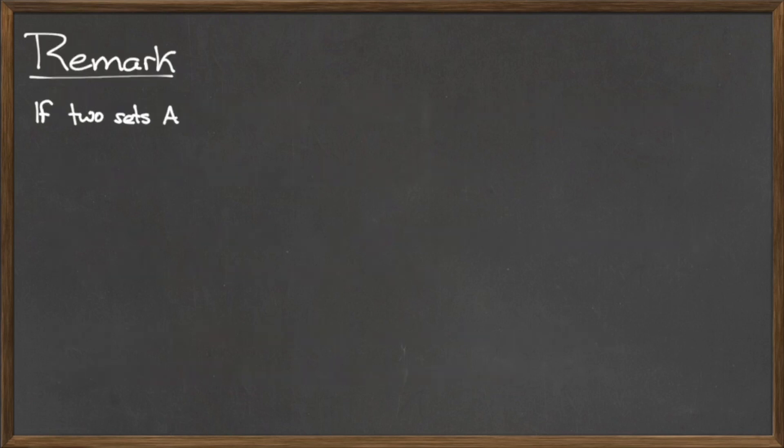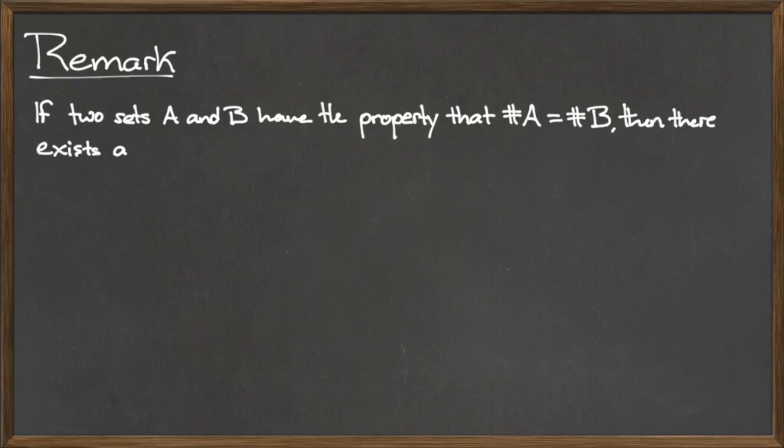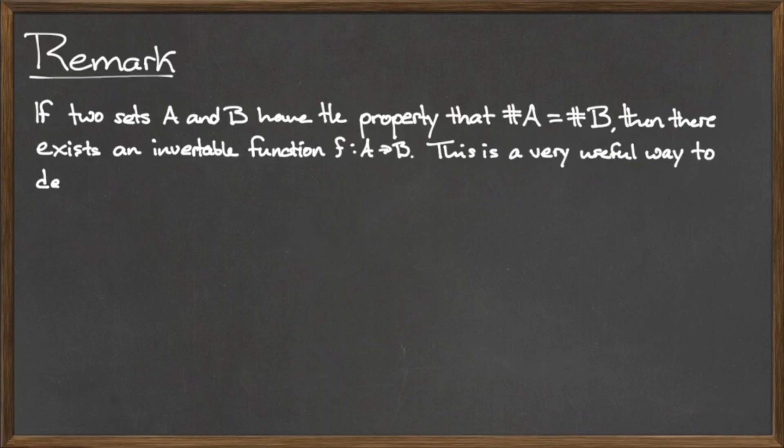There are two important remarks to make about cardinality. The first remark is that two sets A and B have the same cardinality if there exists an invertible function f from A to B.